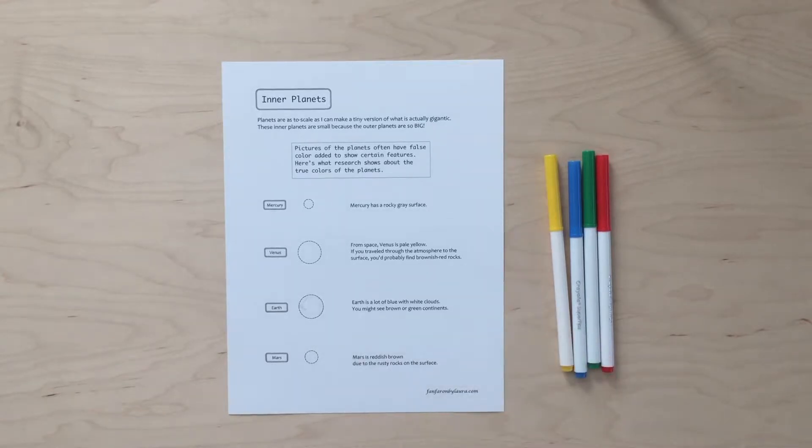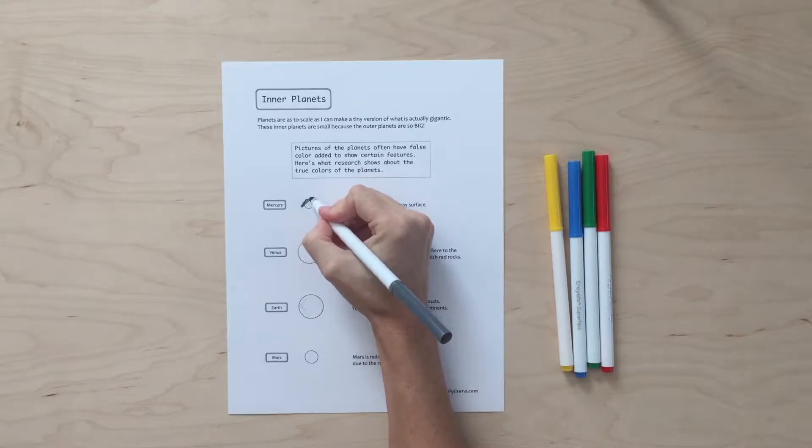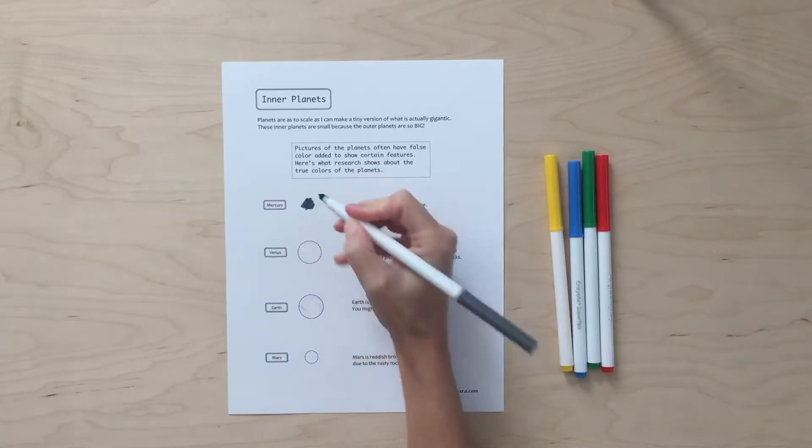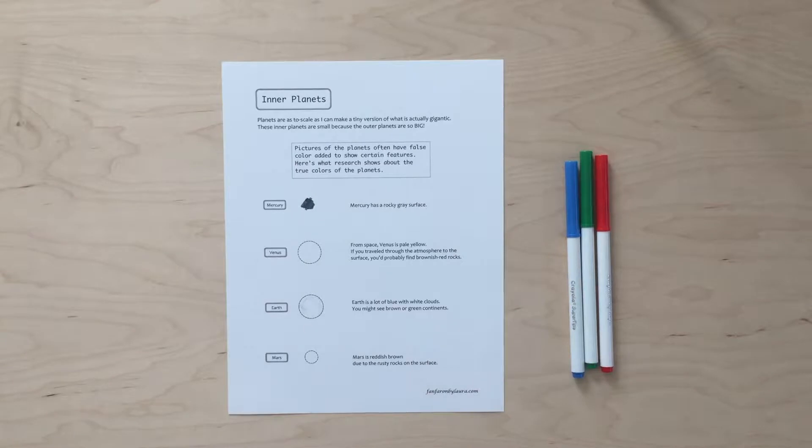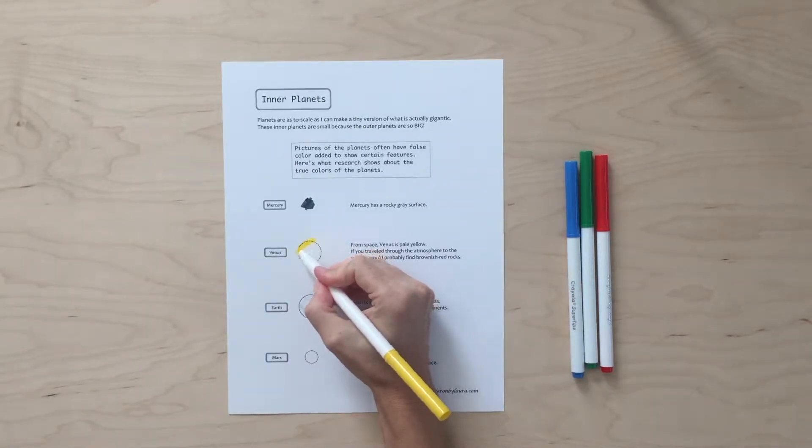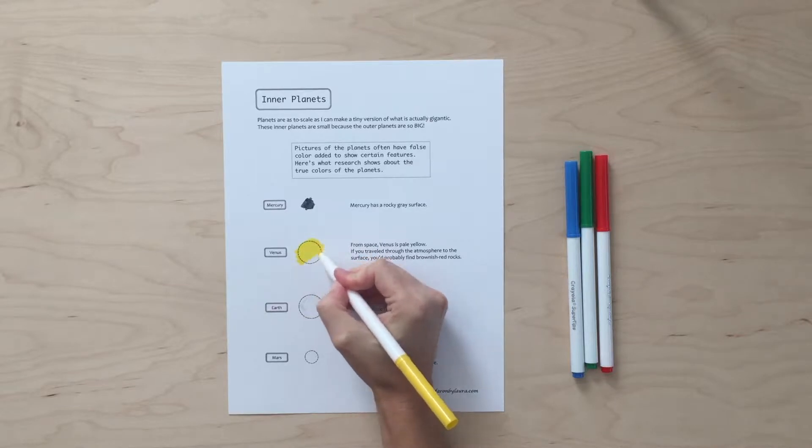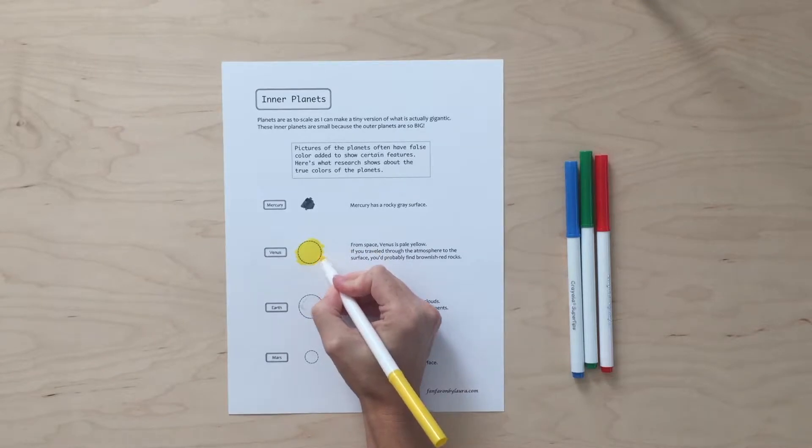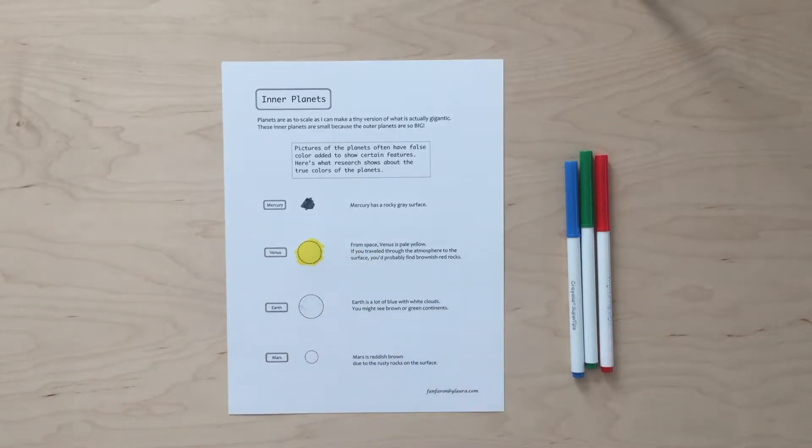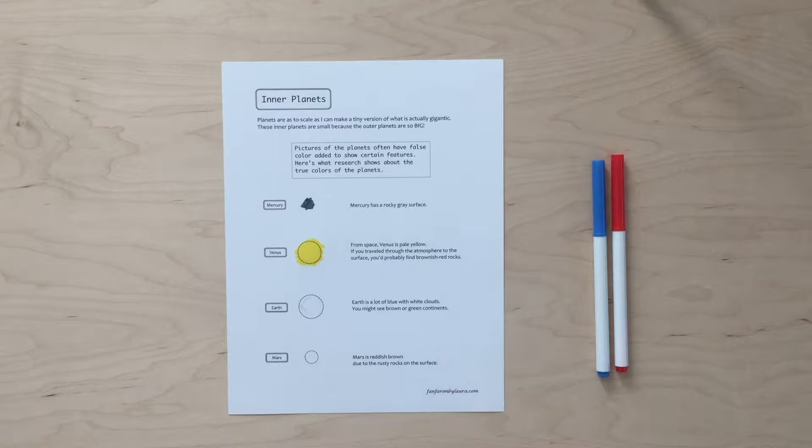As I did some research for this project, I learned that a lot of the pictures you see when you Google the planets don't actually have accurate colors, because a lot of times astronomers add in color to help us see extra details. So I tried to do some research about what colors the planets really appear from space and include that on here for you. So for example, Venus, I learned, really appears pale yellow from space because of its atmosphere. And if you travel through the atmosphere to the surface, that's when you would see the brownish red color that you often see when you look up pictures online.